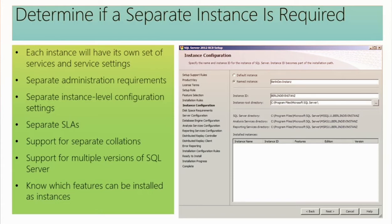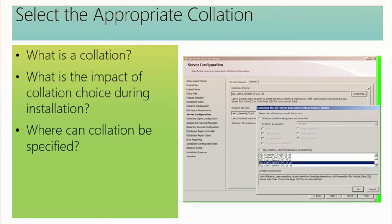Just because you can doesn't mean you should. One of our students had 19 instances in production on one operating system — that seems like pushing it. So let's talk about collations. A collation is a rulebook of text-based sorting and comparison rules, and you must pick a collation during installation.